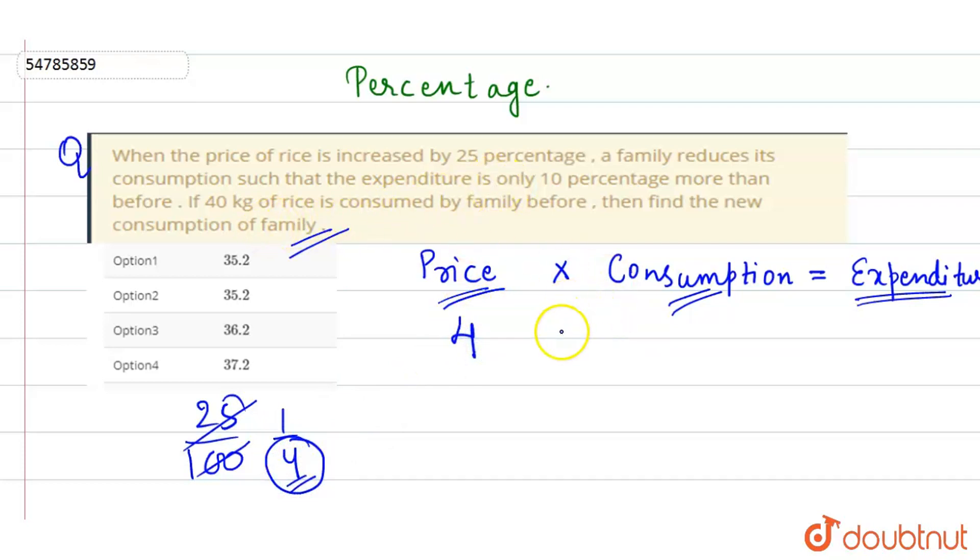And the consumption was 40 kg. So 4 times 40 is 160.